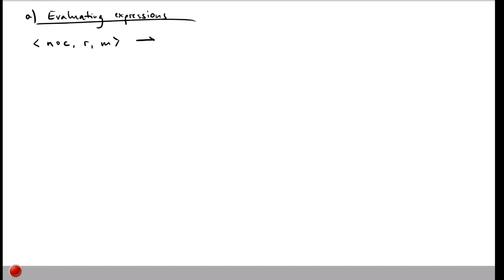The simplest possible expression is one that's already evaluated — just a number. In this case, on our control stack we have a number N followed by the rest of the stack C, some result stack R, and some memory. To evaluate this, we pop N from the control stack so only C remains, and push it onto the result stack so we can use it for later operations. The memory M stays the same, since this doesn't write anything to memory.